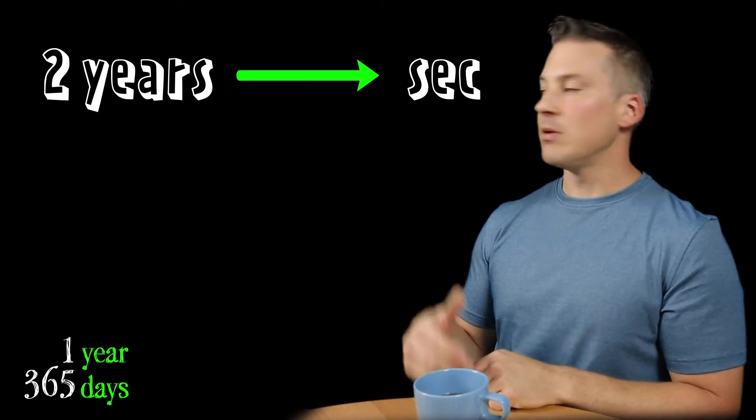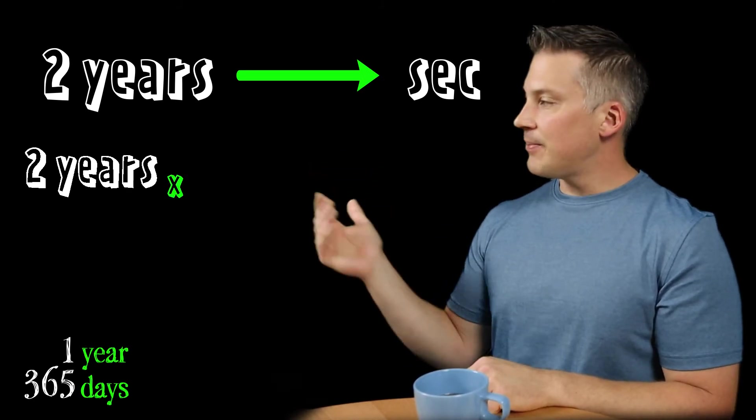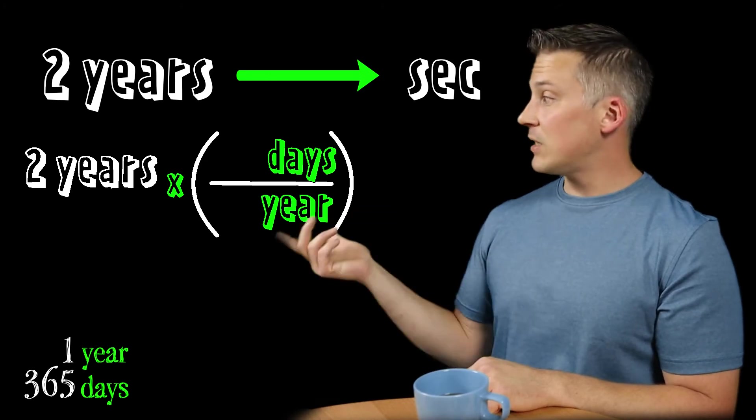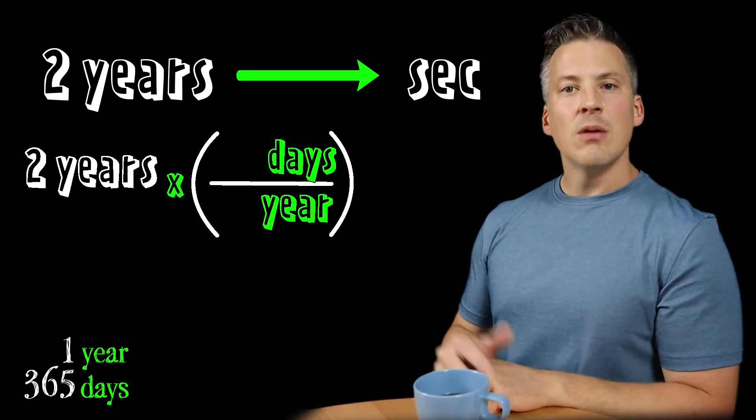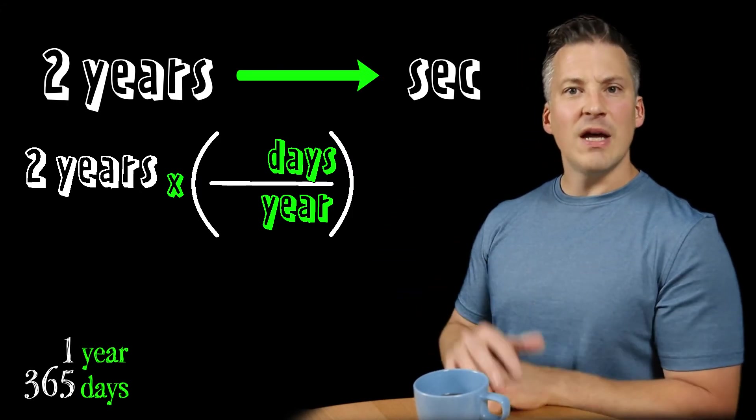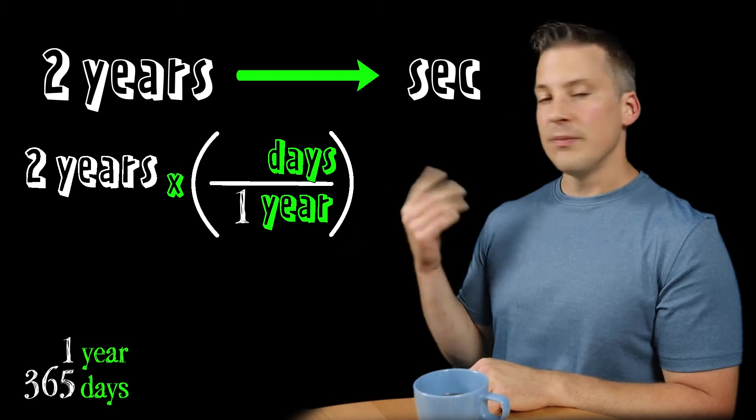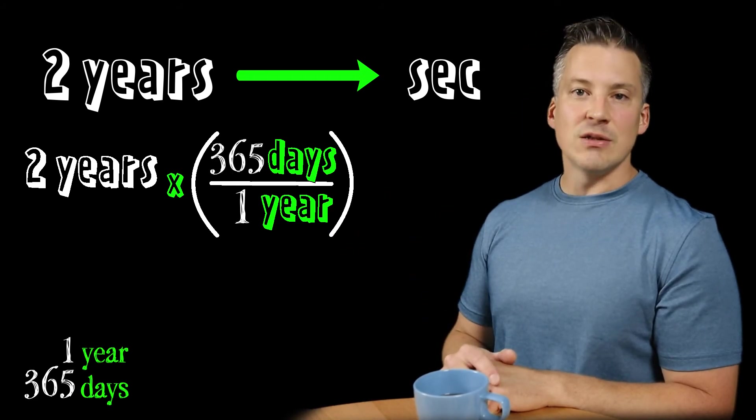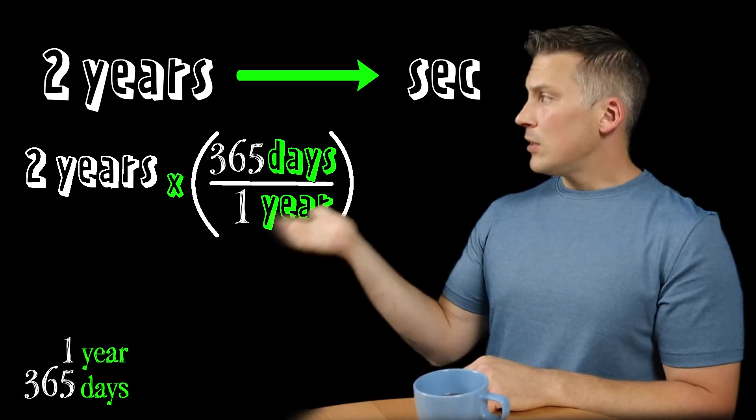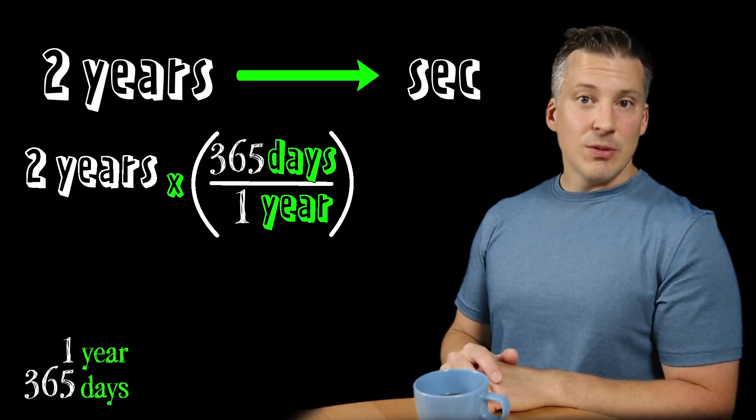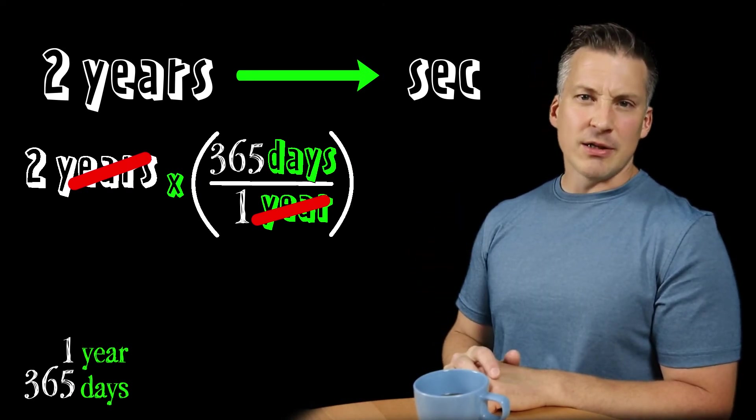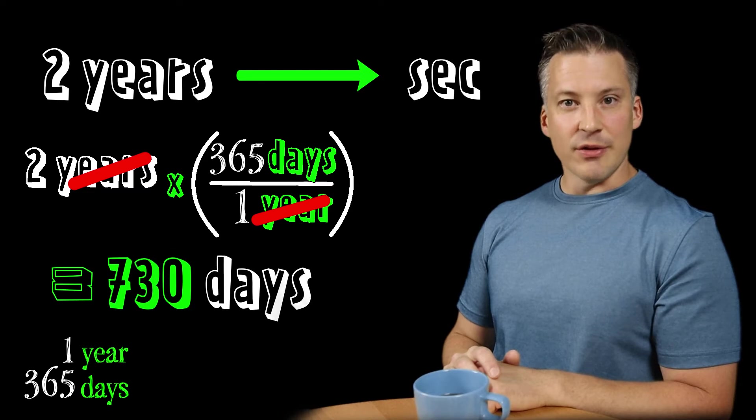So we can use that conversion value to get ourselves into days first. So let's set it up. We write down the given value of two years. Then we're going to multiply it by that conversion fraction. We place in our units. Remember, the years want to cancel, so they're going to go on the bottom. We want to find days here, so they go on the top. And then you're going to plug in the values. So for every one year, there's 365 days. Now, technically, there's 365.25, but honestly, who cares? So let's just do the multiplication out. When you multiply that out, notice the years cancel and we're left with days. How many days does that work out to be? Well, it works out to be about 730 days.